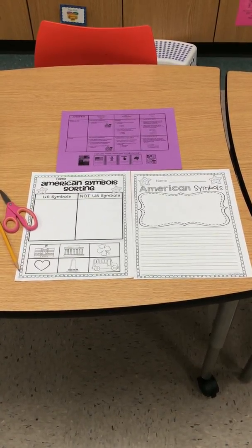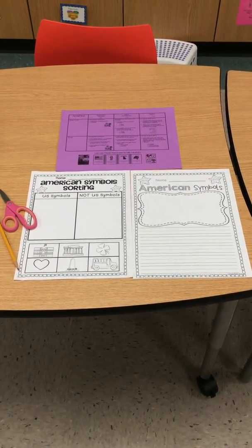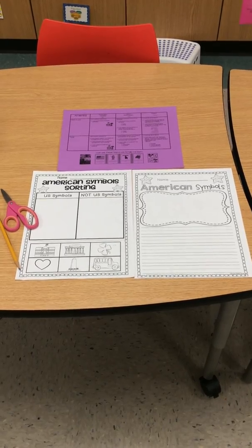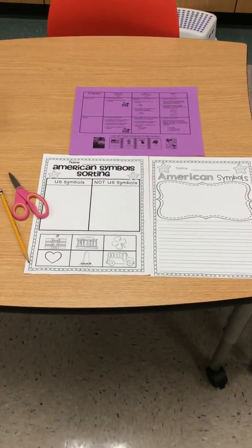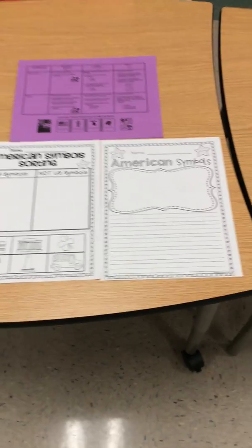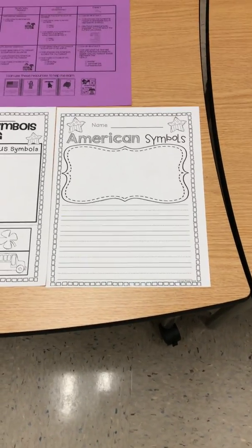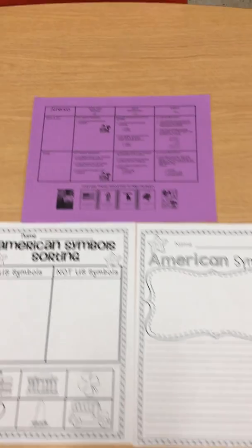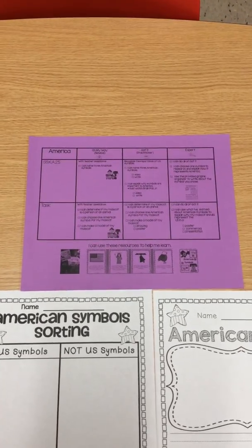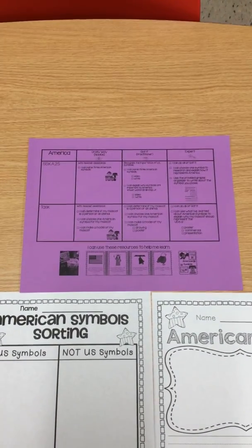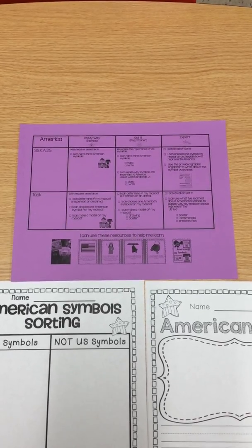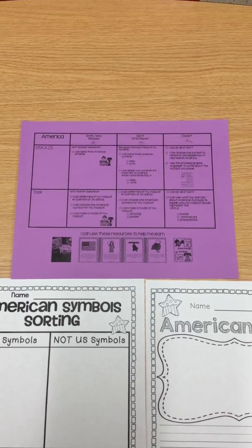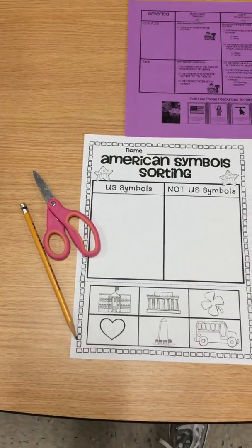Hi boys and girls. For ALU activity B, you're going to need your American Symbols Sorting paper and you're also going to need this writing paper right here. Remember, it's really important that you have your rubric out and ready to make sure that you're doing what you need to do and doing everything that you can do to accomplish the got it and moving to the expert on our rubric. You're also going to need a pencil and a pair of scissors.